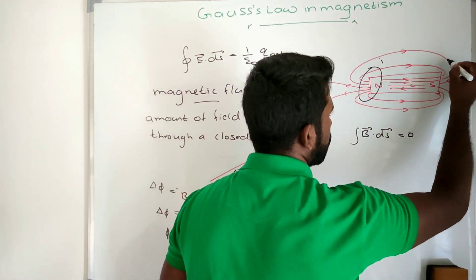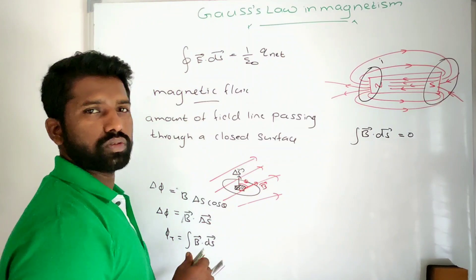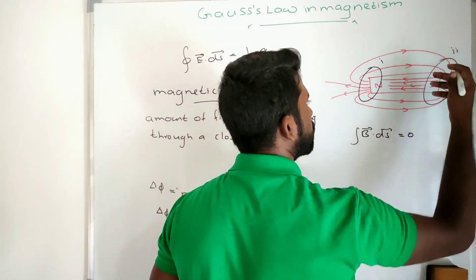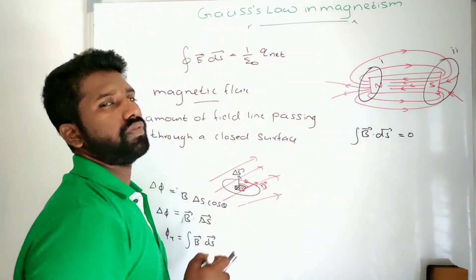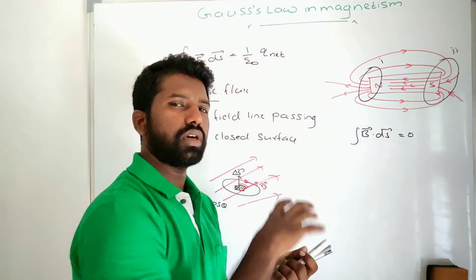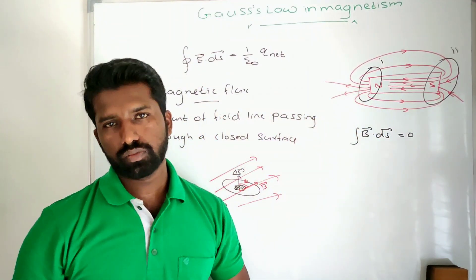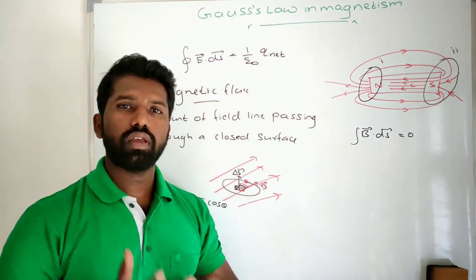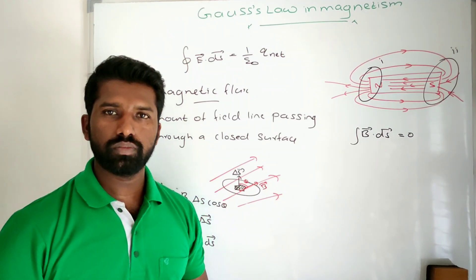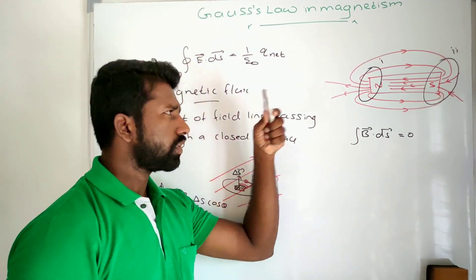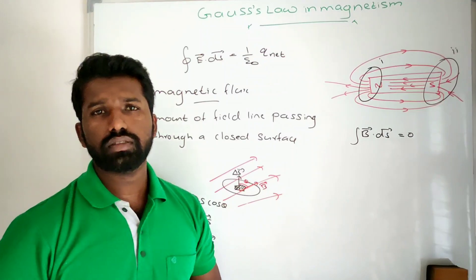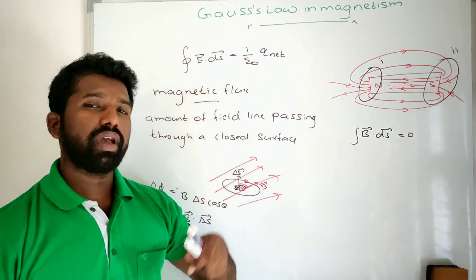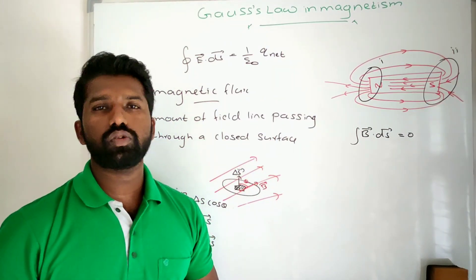Considering another closed loop in a different region: here also the number of field lines entering the loop is equal to the number of field lines leaving the loop. So the magnetic flux is zero there too. Likewise, magnetic flux around any closed loop is zero, and that is Gauss's law in magnetism.